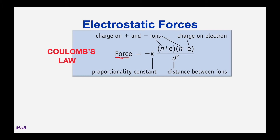The force—how strong the positive-negative charges attract—has two pieces that are really important to us. The top part of the equation is the number of positive and negative charges. For sodium chloride, you'd have a positive one and a negative one, so positive one times negative one is basically a factor of one. However, for magnesium oxide, you'd have a positive two and a negative two—two times two is a factor of four—meaning magnesium oxide has a much stronger force than sodium chloride.